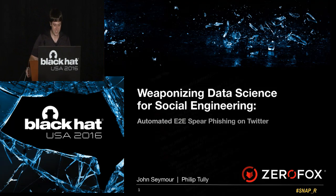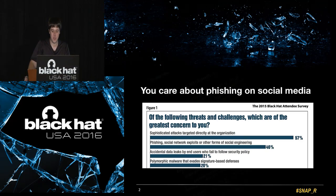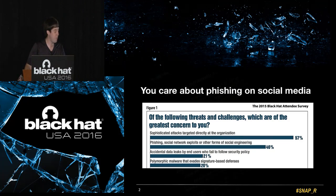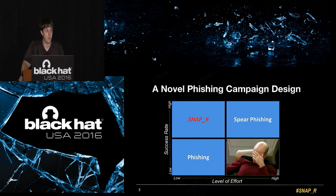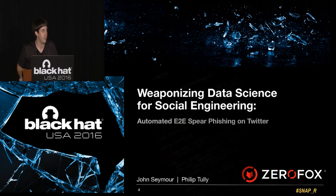Thanks for that introduction. Every year, Black Hat asks its attendees what are the greatest concerns, and every year phishing, social network exploits, or other forms of social engineering is near the top of the list. Traditionally, there are two types of phishing campaigns: standard phishing, which is usually automated but has a very low success rate, and spear phishing, which has a much higher success rate but with much higher cost. The social media pen testing tool we demonstrate and released today combines the automation of phishing with the effectiveness of spear phishing. We'd like to thank you for coming to our talk: Weaponizing Data Science for Social Engineering, Automated End-to-End Spear Phishing on Twitter.